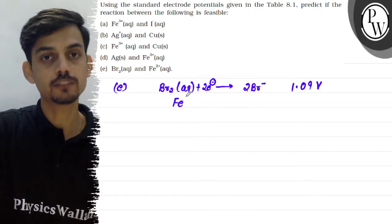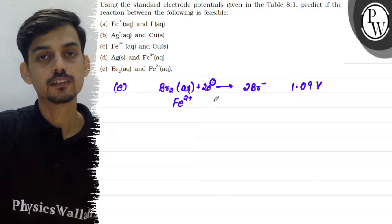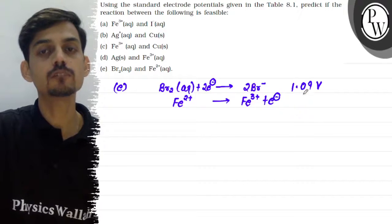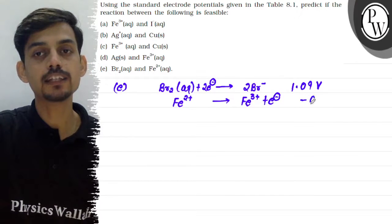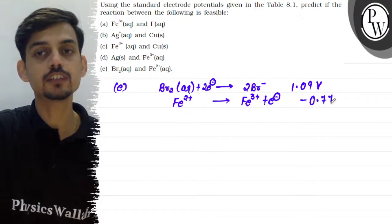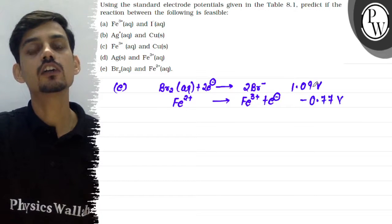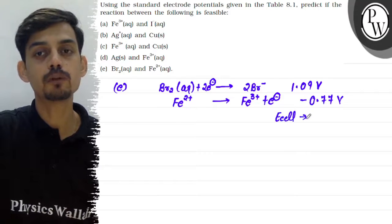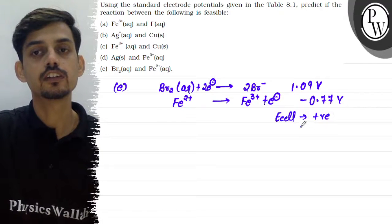And for Fe, Fe2+ ka oxidation hoga into Fe3+. So Br ka reduction hoga, Fe ka oxidation hoga. And its ke liye potential hoga minus 0.77. So here also the E cell will come out to be positive. So the reaction between these two pairs is also feasible.